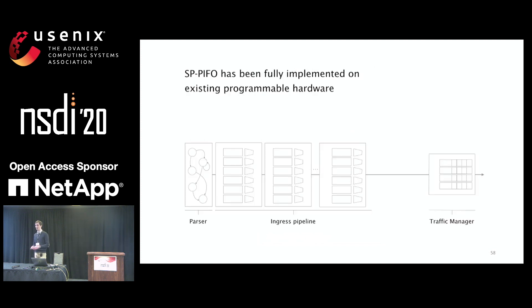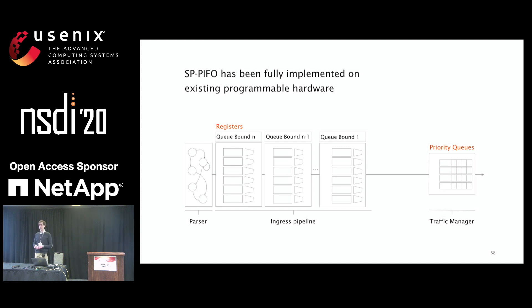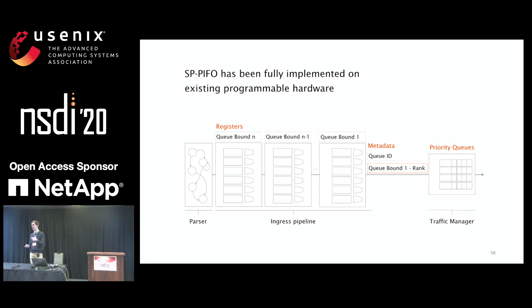To implement SP-PIFO on programmable switches, we focus on the ingress pipeline and need three things. First, configure the traffic manager to support a set of priority queues. Second, maintain one register per queue bound stored in sequential pipeline stages so they can be accessed sequentially during mapping. Third, use metadata to tell the traffic manager which queue was selected, and extra metadata to communicate the cost of any detected scheduling error for implementing push-down. Since registers have already been accessed during mapping and cannot be accessed again in the same pipeline pass, we resubmit the packet to update all queue bounds accordingly.